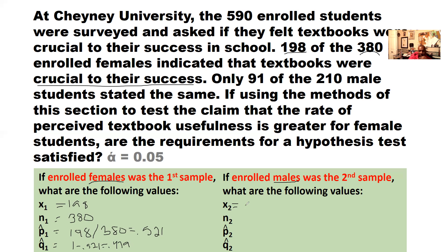Let's do the same exact thing for our second sample. Our second sample is males. The number of confirming cases or successes is 91. The number of people in that sample is 210. Our best estimate of what's going on in the population of males is what we find in our sample, and our sample shows 91 divided by 210. That proportion is 0.433, and to get the proportion of failures we'll just take 1 minus 0.433, which gives us a value of 0.567.